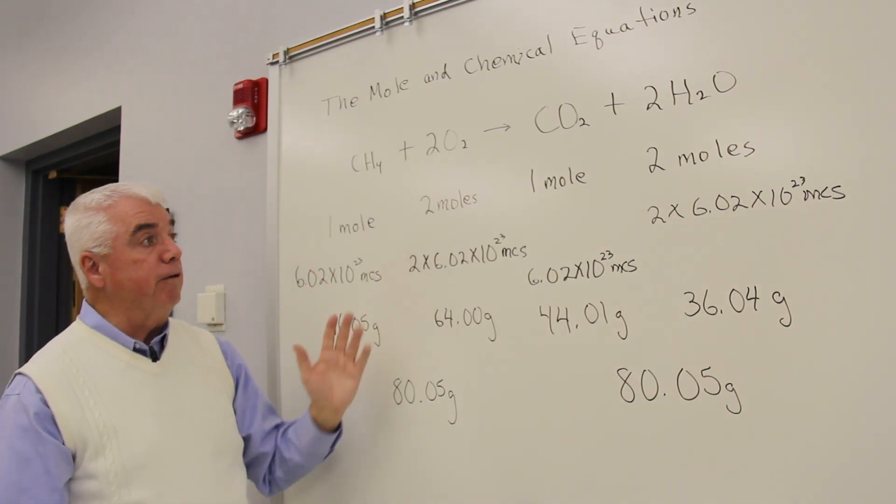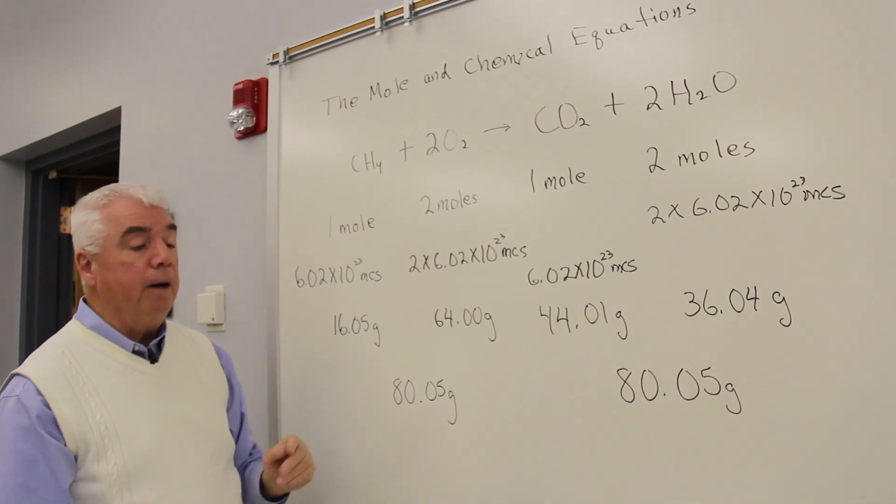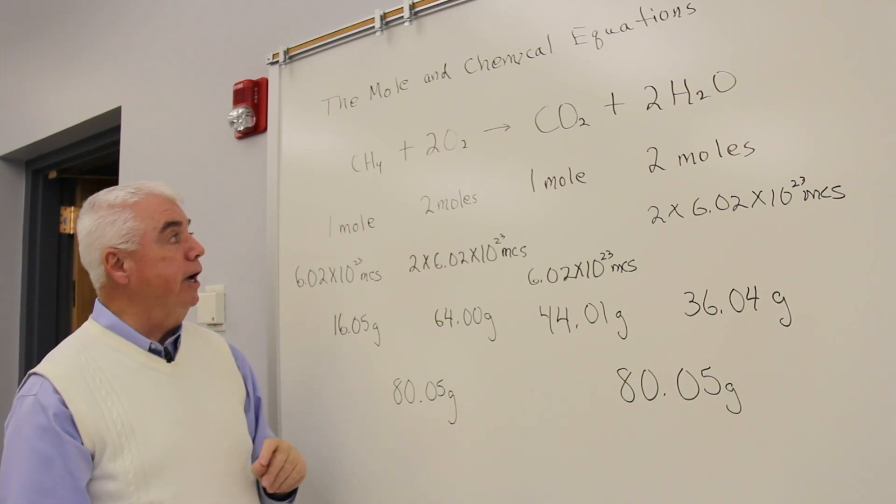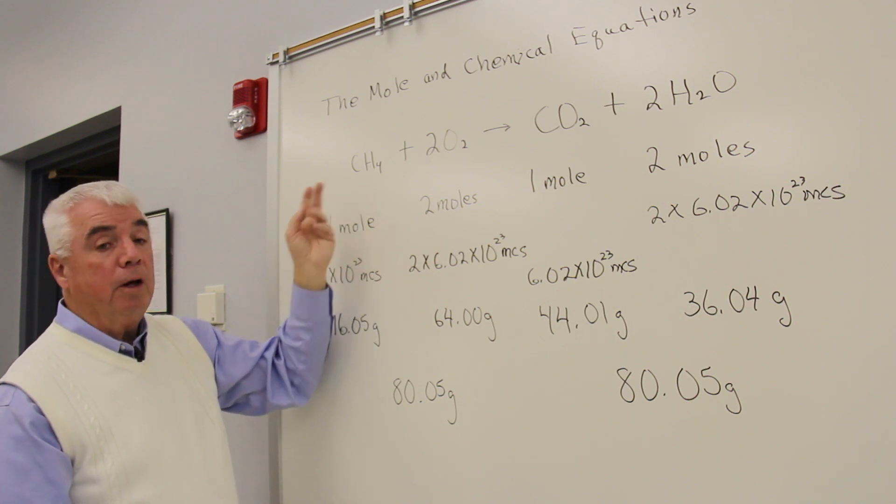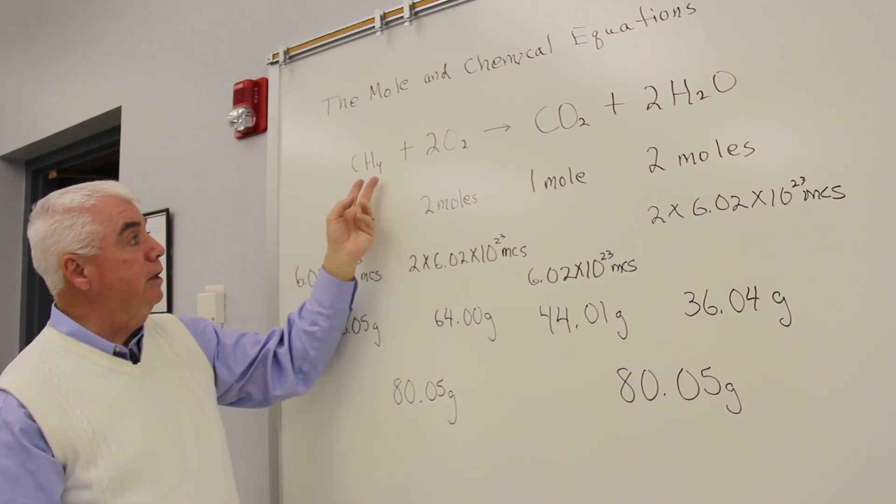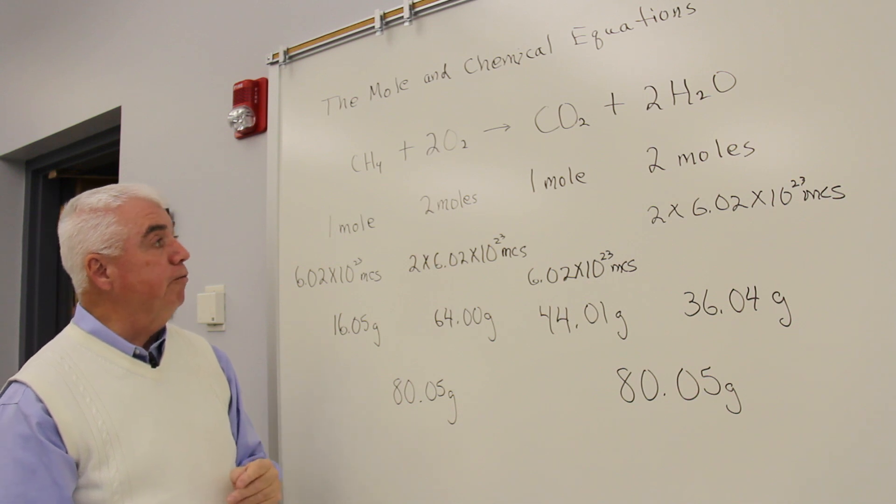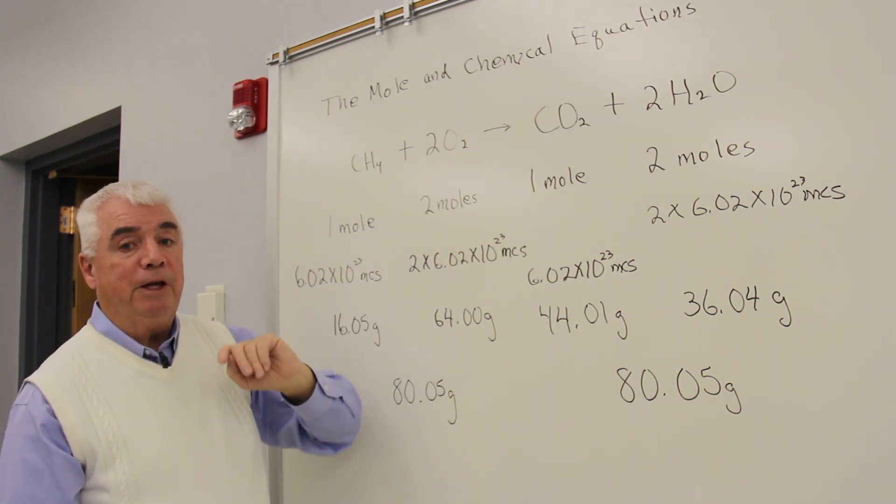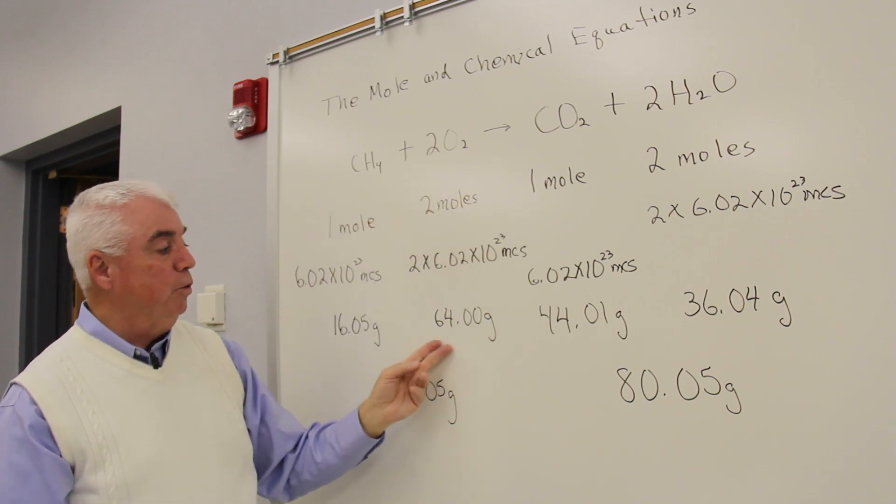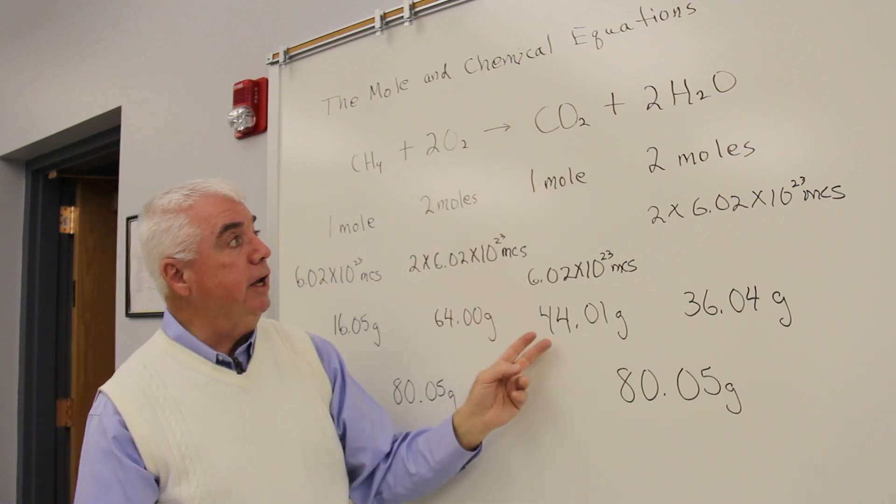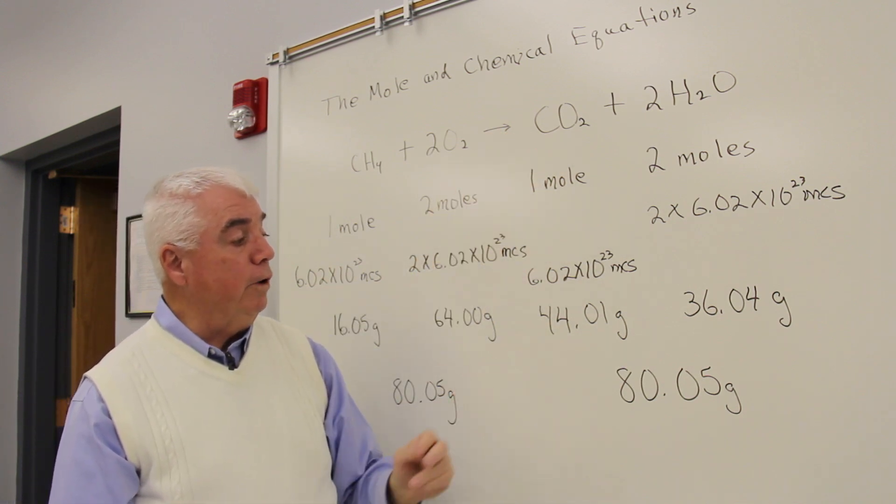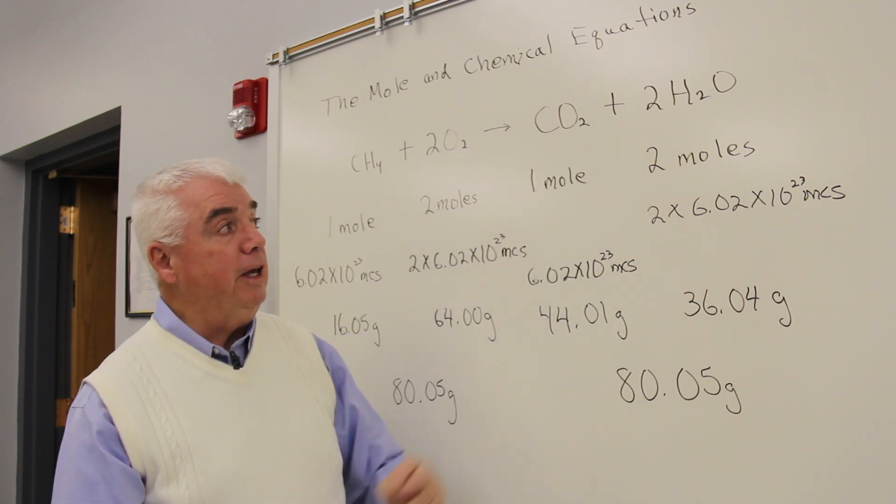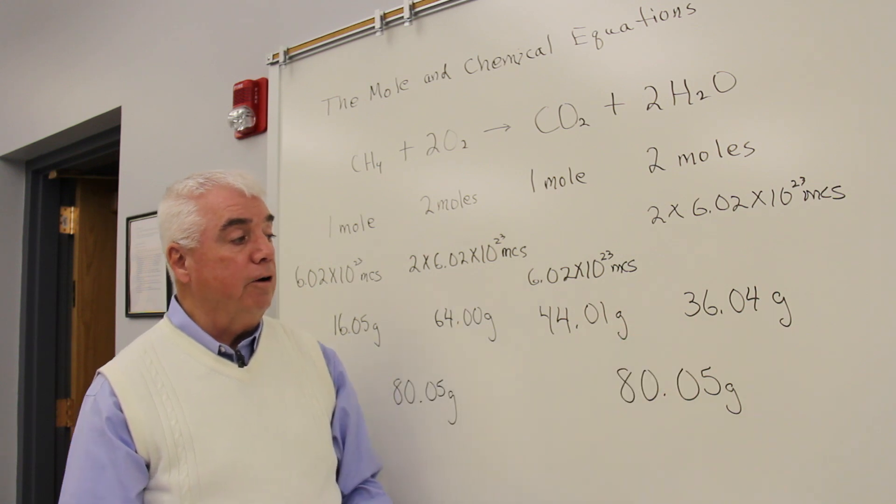A much more useful interpretation of this equation, using the mole concept, would be in terms of grams. One mole of methane we know as the molecular weight in grams. So we'd use the periodic table, look up carbon's atomic weight, 12.01, hydrogen, add that together, and we get 16.05 grams. Oxygen as an atomic weight of 16, times 2 would be 32, times 2 moles would be 64. Over on the right-hand side, when we add up CO2, we get 44.01 grams, 2 moles of water. Oxygen is 16, each of the hydrogens is 1, making 18 times 2, 36.04 grams of water.